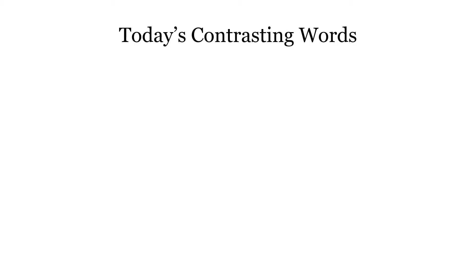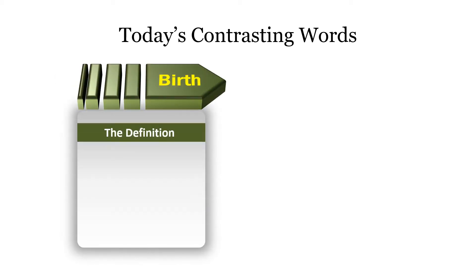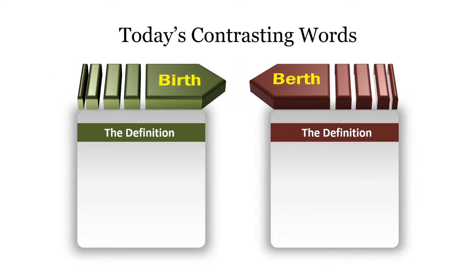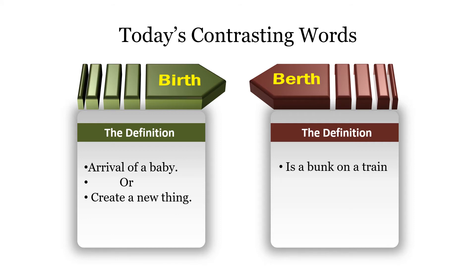Today's contrasting words are 'birth' and 'berth.' The definition of 'birth' with an I is the arrival of a baby, or to create a new thing. But 'berth' with an E is a bunk on a train or a bed on a boat.